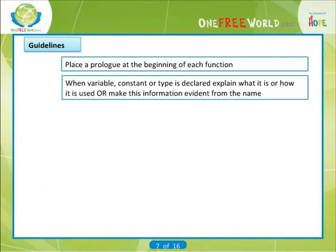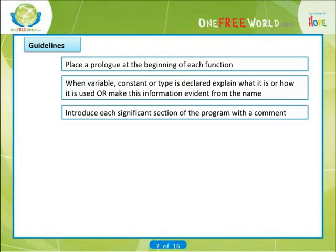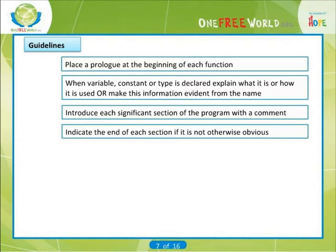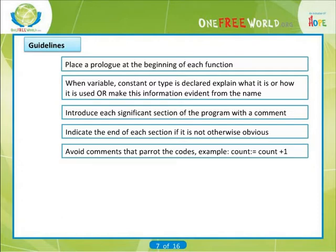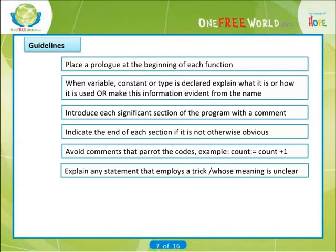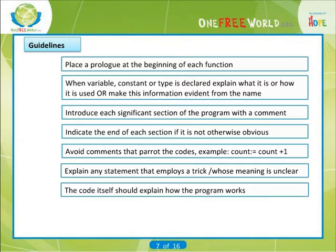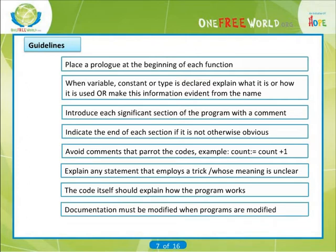When each variable, constant, or type is declared, explain what it is or how it is used, or make this information evident from the name. Introduce each significant section, paragraph, or sub-program of the program with a comment stating briefly the purpose of the action. Indicate the end of each significant section, paragraph, or function if it is not otherwise obvious. Avoid comments that parrot the code — for example, 'count equals count plus one, increments count by one.' Explain any statement that employs a trick or whose meaning is unclear. The code itself should explain how the program works. The documentation should explain why it works and what it does. Whenever a program is modified, be sure the documentation is correspondingly modified.